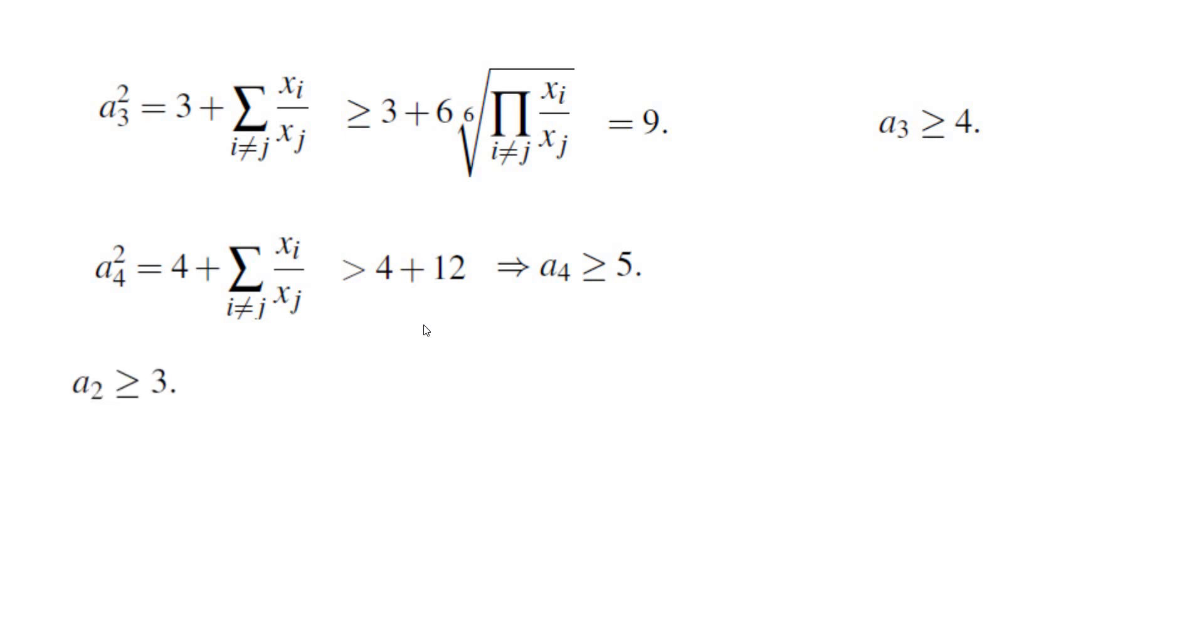Let's summarize what we got so far. We got a2 is at least 3, a3 is at least 4, and a4 is at least 5.